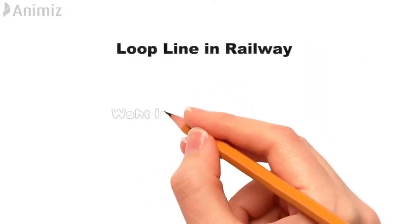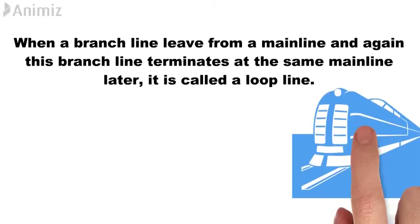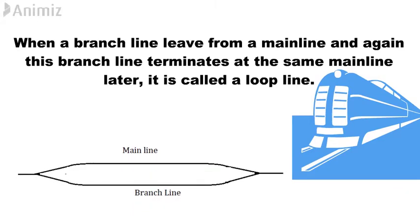Loop line in Railway. What is loop line? When a branch line leaves from a main line and again this branch line terminates at the same main line later, it is called a loop line.